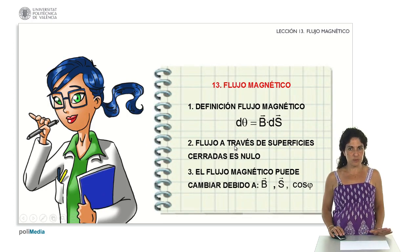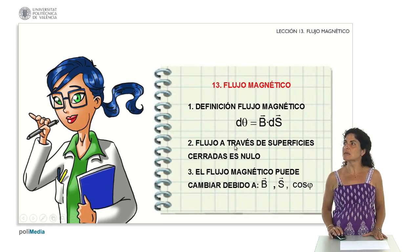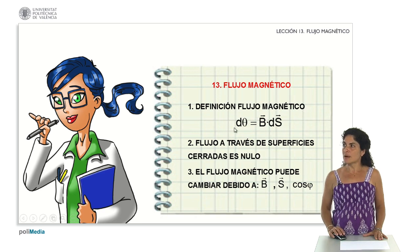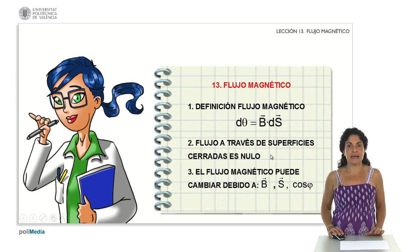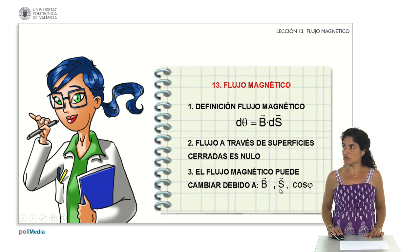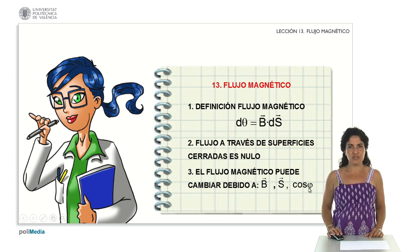Reviewing therefore all that we have to take into account to calculate the magnetic flux, I have to take into account the scalar product of the field vector by the surface vector. I will not forget that the flux through closed surfaces will always be zero and that the factors that will change the magnetic flux are given by the field vector, by the surface vector, and by the orientation of the two vectors from the cosine of the angle they create. We will continue applying everything we have seen so far in the next lesson. Thank you so much students.